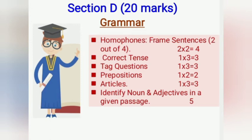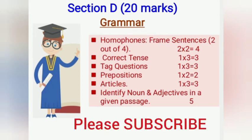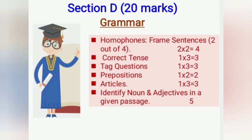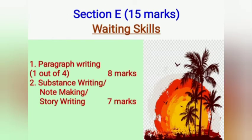Next, identification of nouns and adjectives in a given paragraph. It means there will be a paragraph and you will have to identify the nouns as well as the adjectives. From this identification of nouns and adjectives you will get five marks in total.